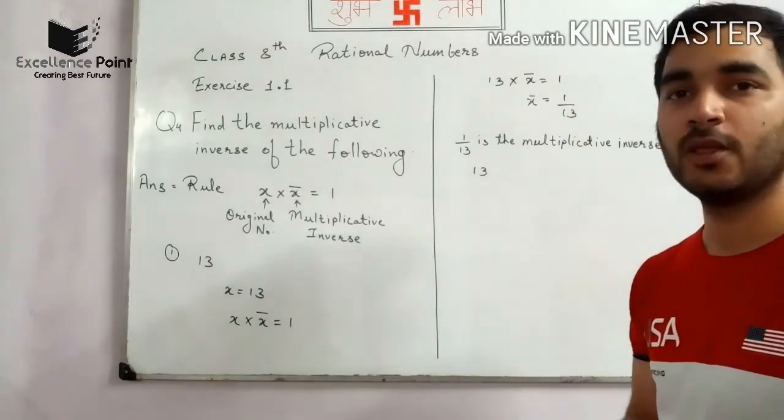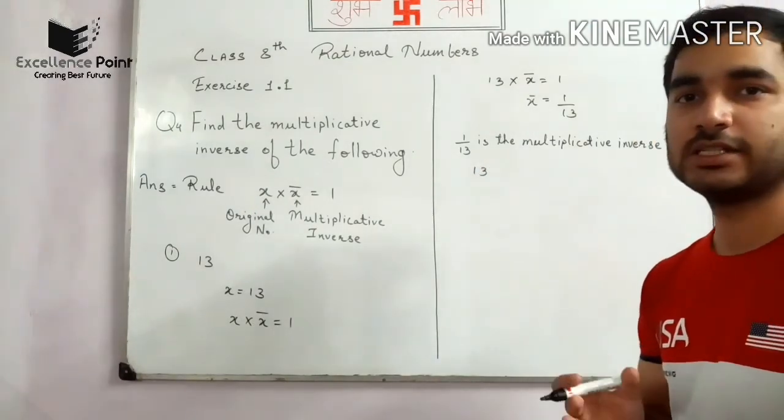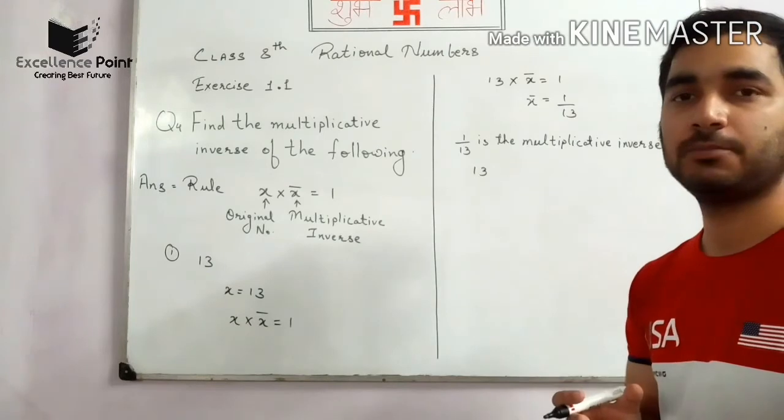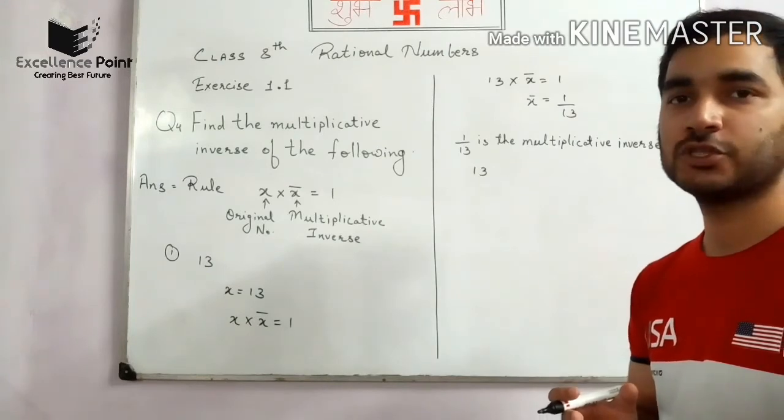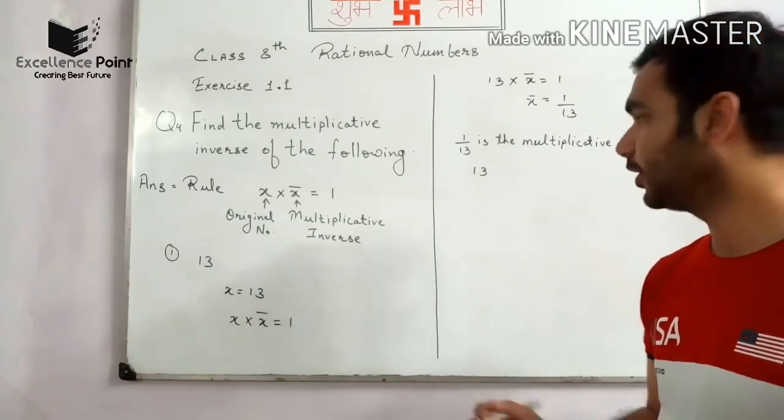So we can say that 1 by 13 is the multiplicative inverse of 13.